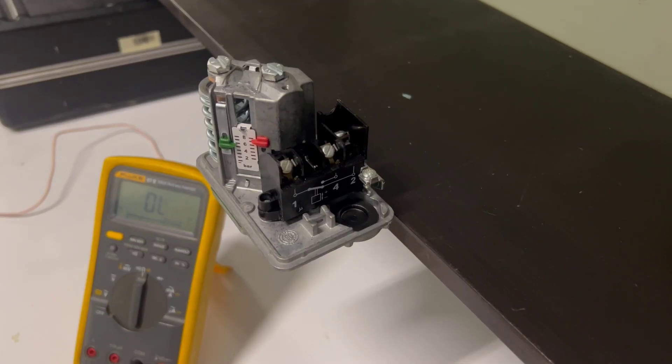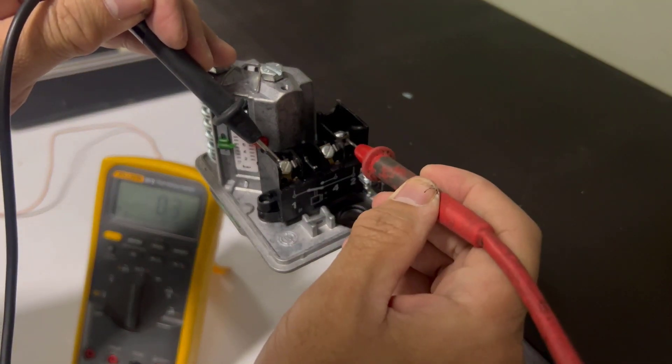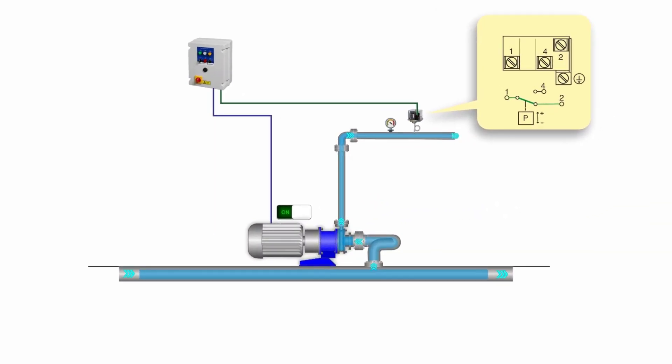Low pressure of the diaphragm closes contact 1 and 2. This can be used as a run signal for a pump or compressor motor. If pressure exceeds the upper switching point, contact 1 and 2 opens and contact 1 and 4 closes. The applied motor will be switched off.